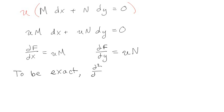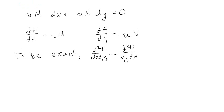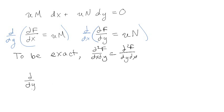We also said that to be exact, the mixed partials must be equal: ∂²f/∂x∂y has to equal ∂²f/∂y∂x. So that means ∂/∂y of uM has to equal ∂/∂x of uN.